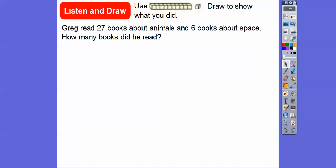So here we go. We'll first do a 10 stick here. So here, Greg reads 27 books about animals and six books about space. So how many books did he read? What we're going to do is add 27 plus 6.